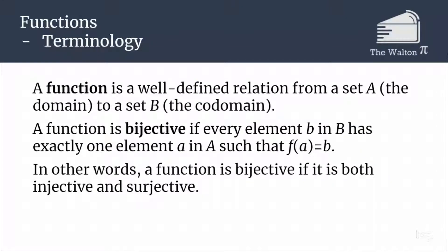To start off, let's do a quick reminder of what it means for something to be a function. A function is a well-defined relation, meaning that no element in set A maps to two different elements in set B. Set A is called the domain and set B is called the codomain. A function is bijective if every element b in set B has exactly one element a in set A such that f(a) = b. In other words, a function is bijective if it is both injective and surjective.